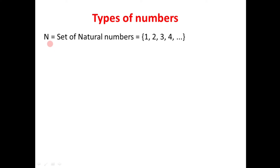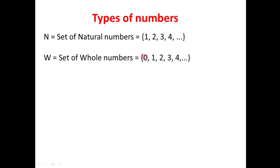The first type of number is a natural number. The set of natural numbers is denoted by letter N. These are the numbers which are used for counting objects, that's why they are also called as counting numbers. If we add 0 to natural numbers — that is 0, 1, 2, 3, 4 and so on — these are called as whole numbers. The set of whole numbers is denoted by letter W.